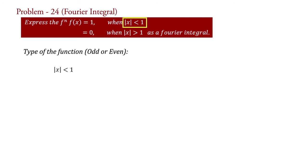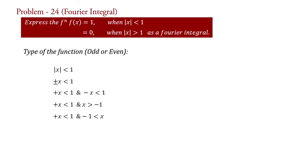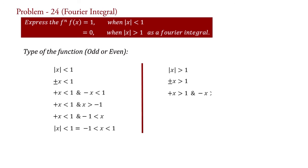Here, |x| < 1 means ±x < 1, which gives x < 1 and −x < 1, that is x < 1 and x > −1, so −1 < x < 1. On the other side, |x| > 1 means ±x > 1, giving x > 1 and −x > 1, so x > 1 and −1 > x, meaning |x| > 1 corresponds to x < −1 or x > 1.